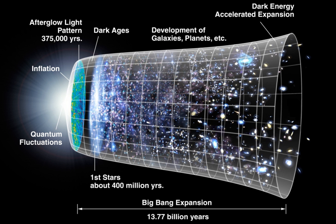The theory also explains large-scale structure and Hubble's law: the farther away galaxies are, the faster they are moving away from Earth. If the observed conditions are extrapolated backwards in time using the known laws of physics, the prediction is that just before a period of very high density there was a singularity, which is typically associated with the Big Bang. Detailed measurements of the expansion rate of the universe place the Big Bang at around 13.8 billion years ago, which is thus considered the age of the universe.